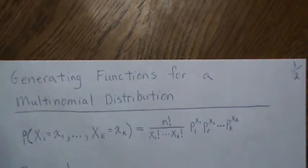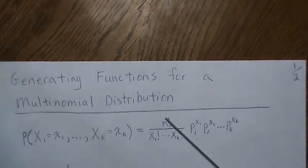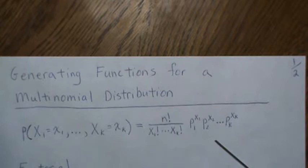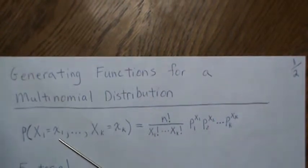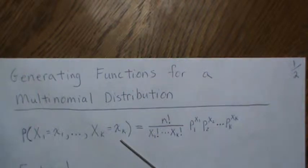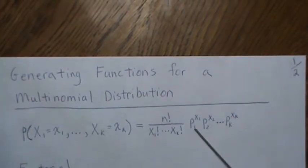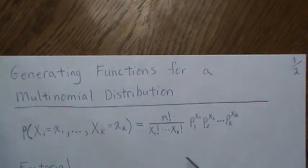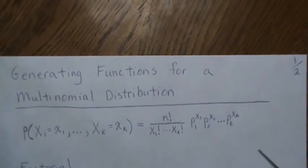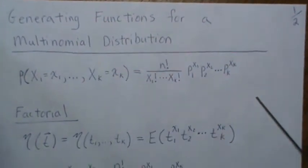Hello, in this video we're going to derive the generating functions for a multinomial distribution. The PMF is defined like this: the probability that x1 equals x1 through xk equals xk is defined like this. There are some restrictions that the x's sum to n and the p's sum to 1. I forgot to write that, but that's one of the extra criteria.